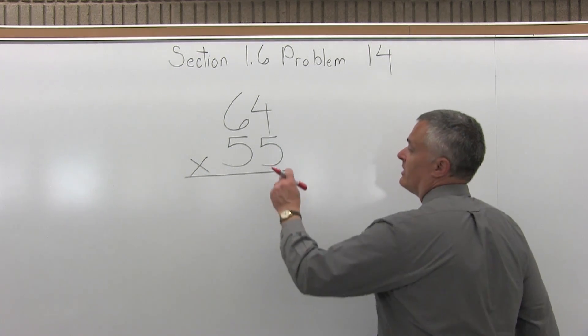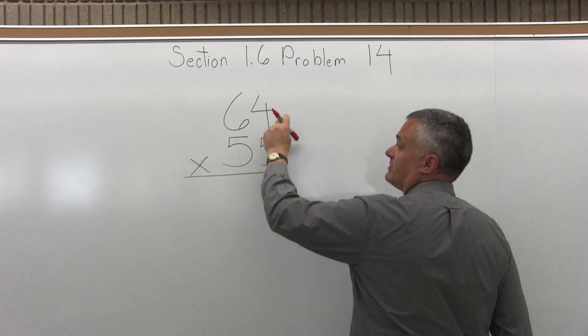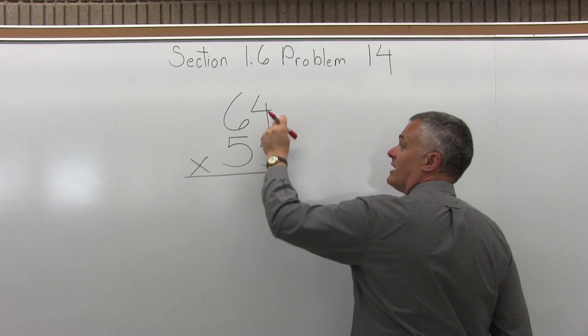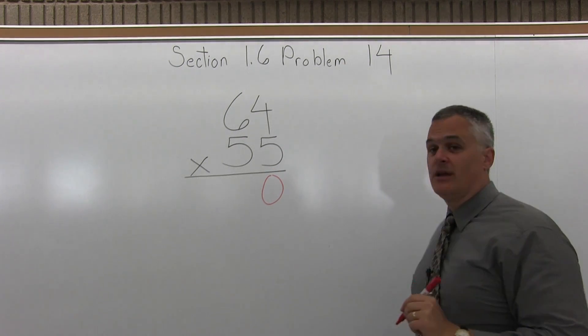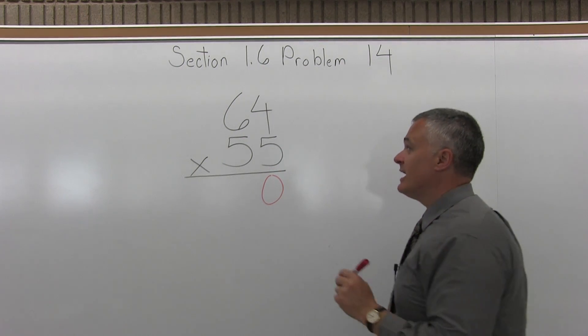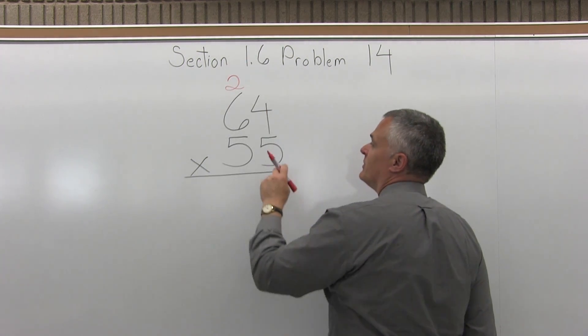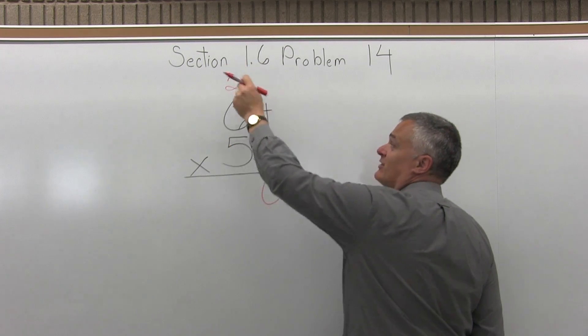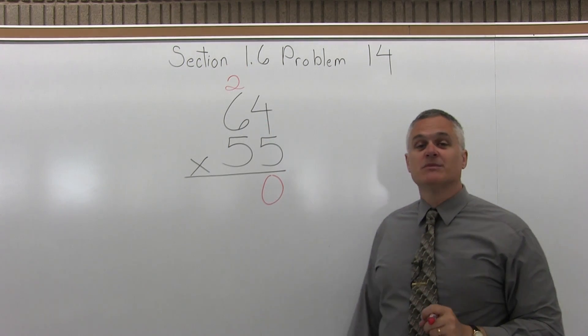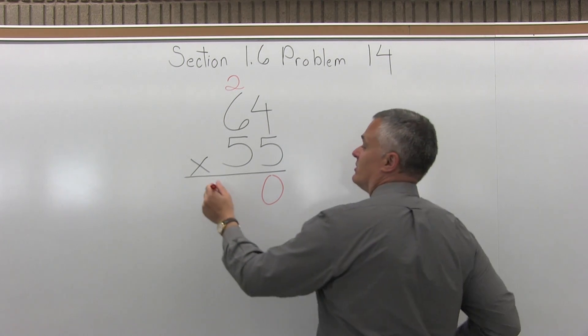To start I'll multiply the 5 in the bottom in the right position times the 64. So, 5 times 4 is 20. I put the 0 from the 20 in the far right position, and then the 2 from the 20 gets carried to the top of the next column. Now I do 5 times 6 and add the 2 that was carried. 5 times 6 is 30, then 30 plus the 2 that was carried is 32.